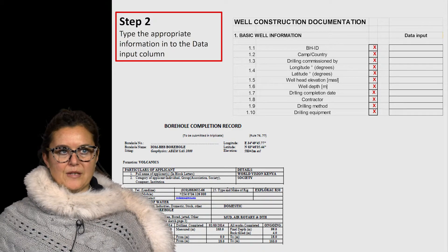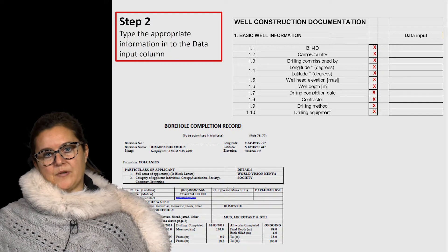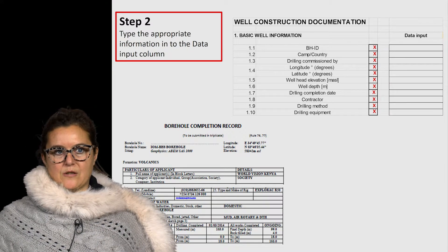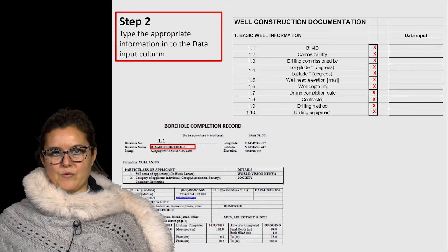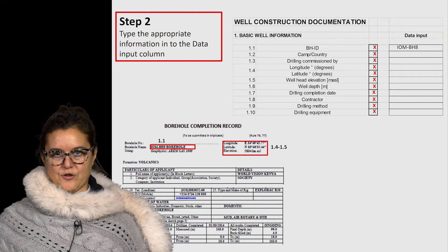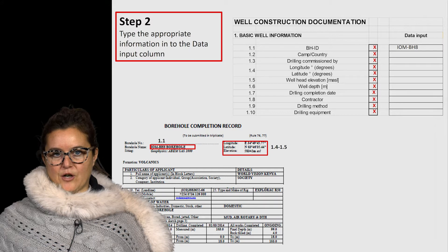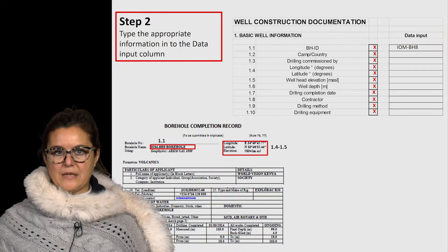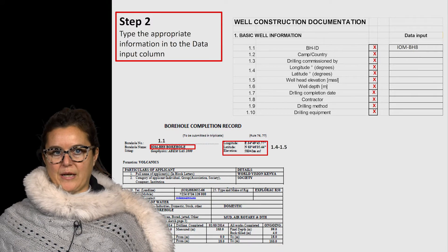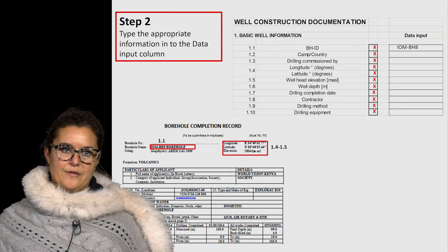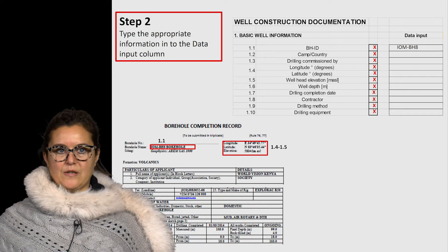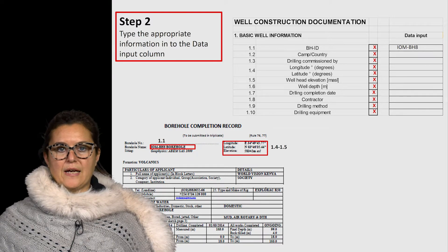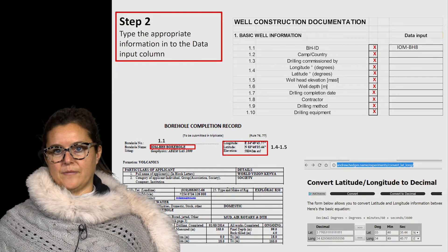Now we move to step two: we need to type the appropriate information into the data input column. We look again at the borehole completion report, and as soon as we find the borehole ID, we fill it in by hand in the data input column. The same for the latitude, longitude, and elevation. Most of the time, the latitude and longitude are not in geographical coordinates, so to make it homogeneous across all databases we need to convert them into degrees decimals. There are three main ways to do this: first, set up the GPS device to display degree decimal coordinates; second, transform the coordinates through Google Earth; and third, use any free internet-based converter.